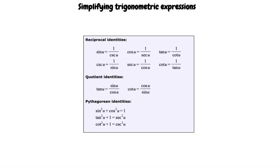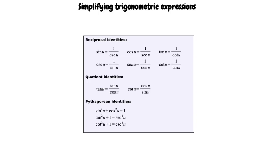Let's do an example so you can see how to go about this. This example is asking us to simplify cosine of x tangent squared of x plus cosine of x.